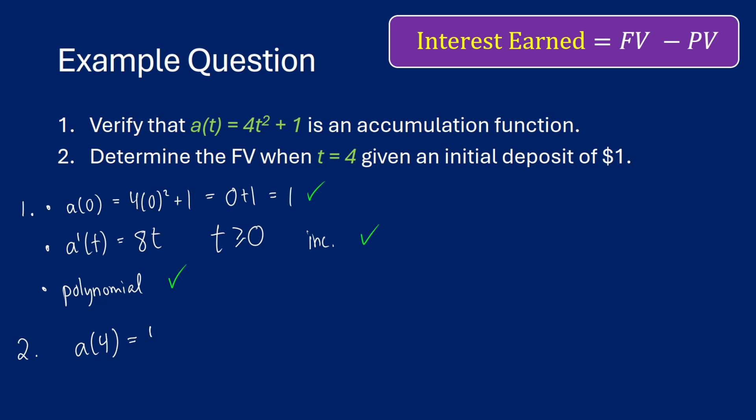So a(4) is going to be 4 times 4², putting 4 in for t, plus 1, which 4 times 4 times 4 is just going to be 64 + 1, which is going to be a total of $65. That is going to be our future value.